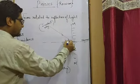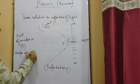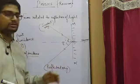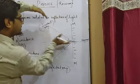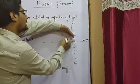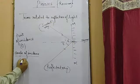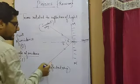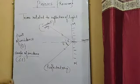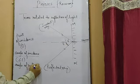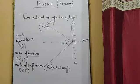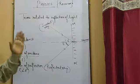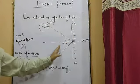The angle of incidence, denoted by I, is the angle between the normal and the incident ray. This is the normal line and this is the incident ray, so the angle between them is the angle of incidence. Similarly, the angle between the reflected ray and the normal is known as the angle of reflection, denoted by R.